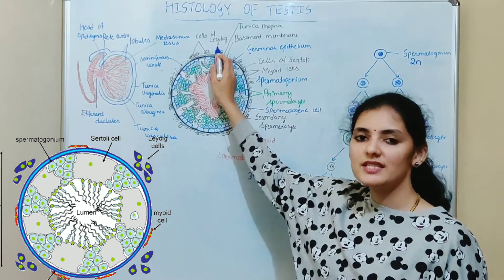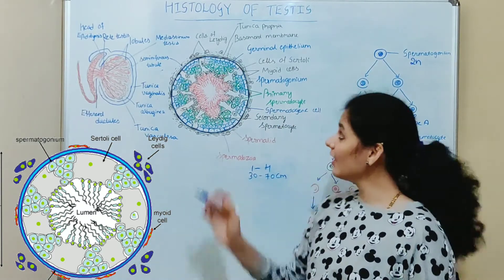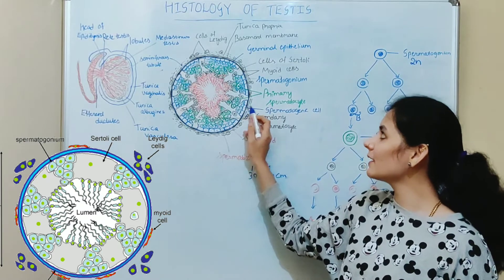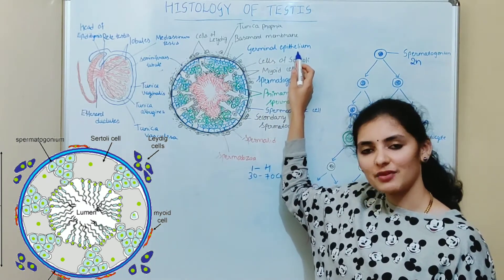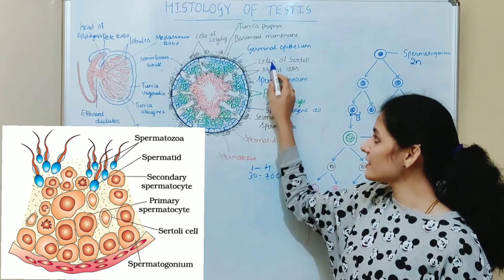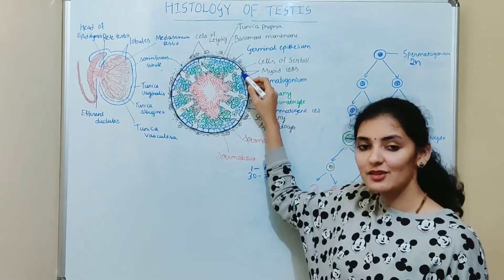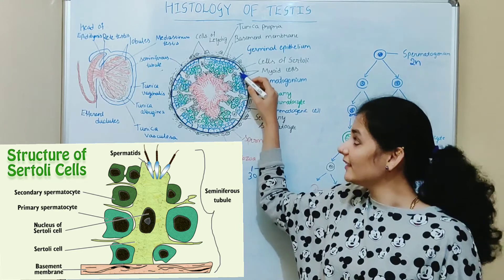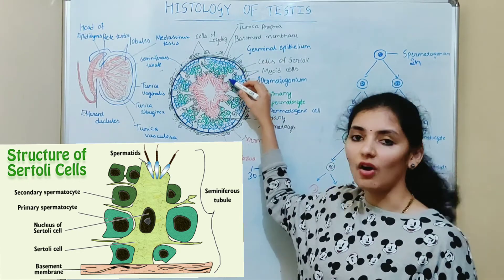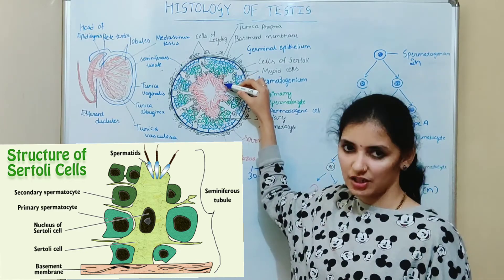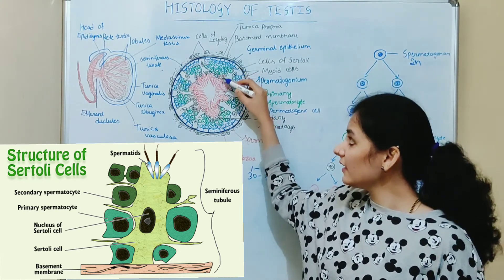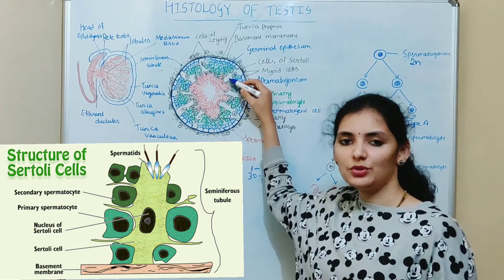Leydig cells have an endocrine function and secrete the male sex hormone testosterone. Below the outermost tunica propria layer, a layer of basement membrane is present. Below this basement membrane, germinal epithelium or complex stratified epithelium is present. This germinal epithelium consists of mainly two types of cells: cells of Sertoli and spermatogenic cells. The cells of Sertoli are also called supporting cells or sustentacular cells, and they extend from the basement membrane to the lumen of the seminiferous tubule. These cells of Sertoli are long columnar cells and irregularly shaped, with a single oval nucleus which is eccentrically positioned. As the name indicates, these supporting cells support the developing germ cells and provide nutrition for them.